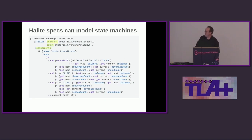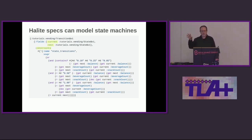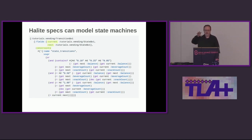There's nothing explicitly in Halite that supports temporality, but you can model it. So if we had a spec that captured the state of a vending machine — this is a vending machine example — you could make a spec on top of that with two instances of that spec, one for the current state, one for the next state, and then have additional constraints. At that point you're modeling the state machine, and all your constraints specify the valid transitions.